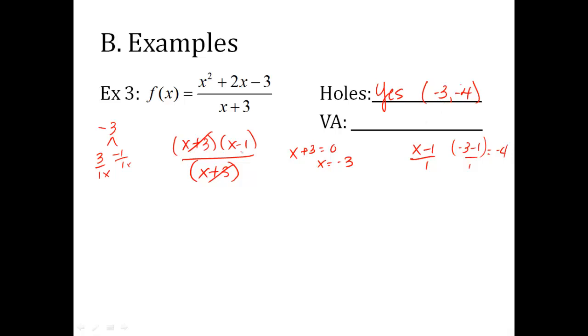There's the coordinate for my hole. Now, vertical asymptote. I don't have any x's in the denominator to solve for x. So I just say none.